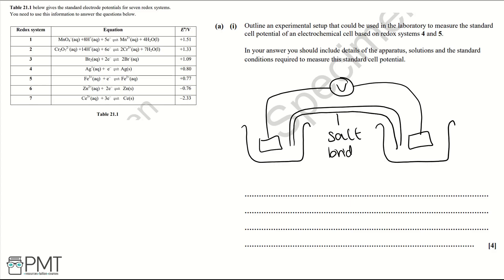The next part of the question is identifying what's in your beakers and what your electrodes are made out of. In order to identify what our electrodes are made of and what is in our two beakers, we need to take a closer look at redox systems 4 and 5.